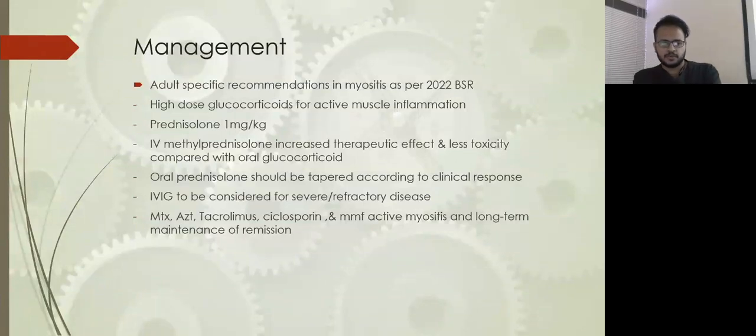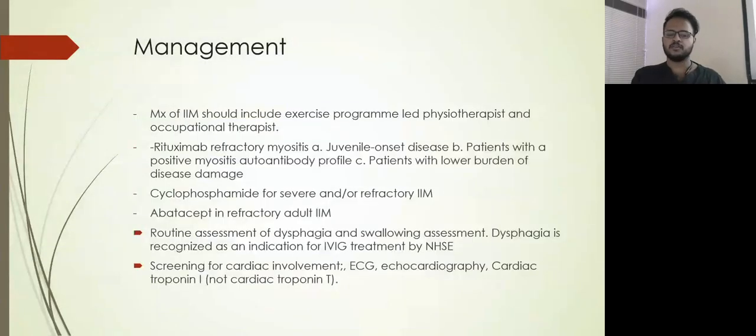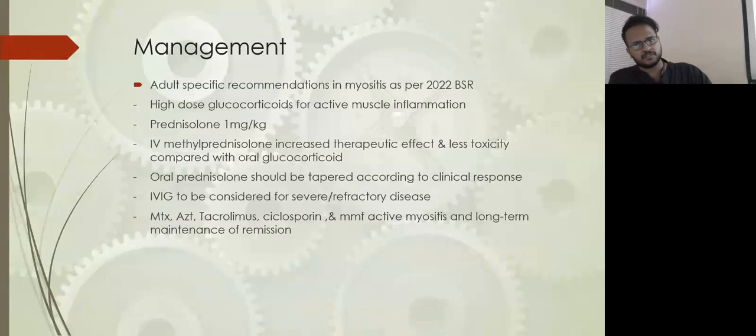Management: As per the 2022 British Society of Rheumatology, the current adult-specific recommendation is high-dose glucocorticoids for active muscle inflammation and pain. Prednisolone 1 mg per kg can be given, or IV methylprednisolone can also be offered. Oral should be tapered as soon as the patient shows clinical response. Oral prednisolone can be slowly tapered, usually over six weeks. IVIG, rituximab, cyclophosphamide, and abatacept can be considered for severe and refractory diseases.